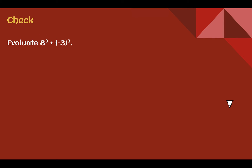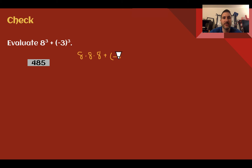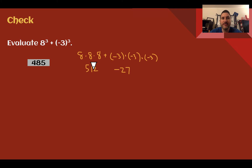Check your understanding: Evaluate 8 to the 3rd power plus negative 3 to the 3rd power. Pause the video now and complete the check. You should have got 485. This would be 8 times 8 times 8, plus negative 3 times negative 3 times negative 3. 8 times 8 times 8 is 512. Negative 3 times negative 3 is positive 9, times negative 3 is negative 27. 512 minus 27 gives us 485.